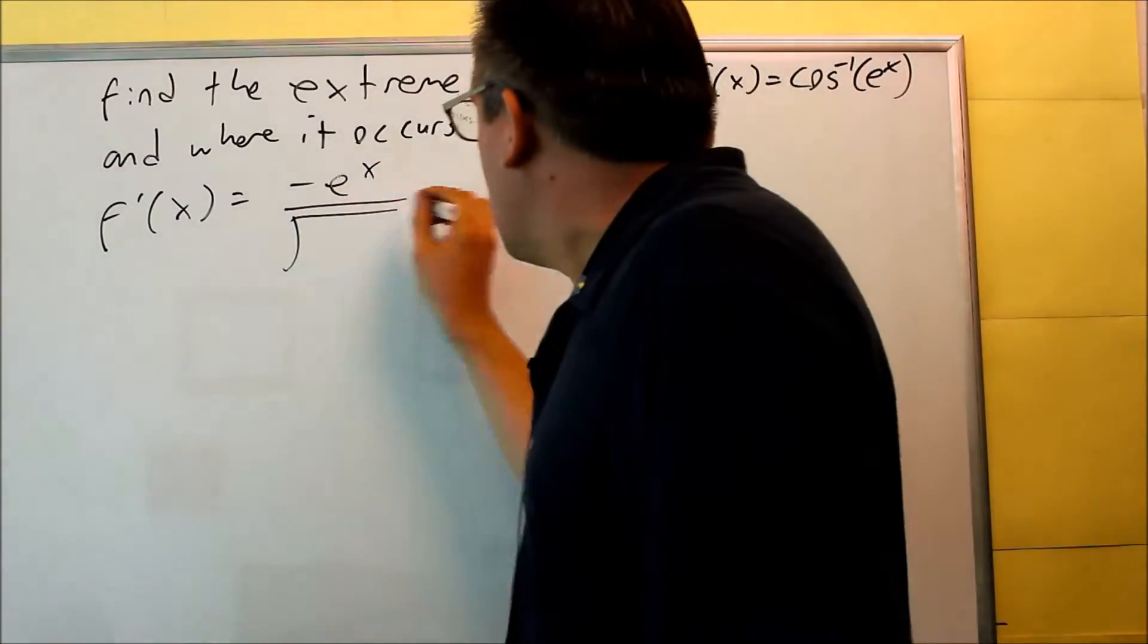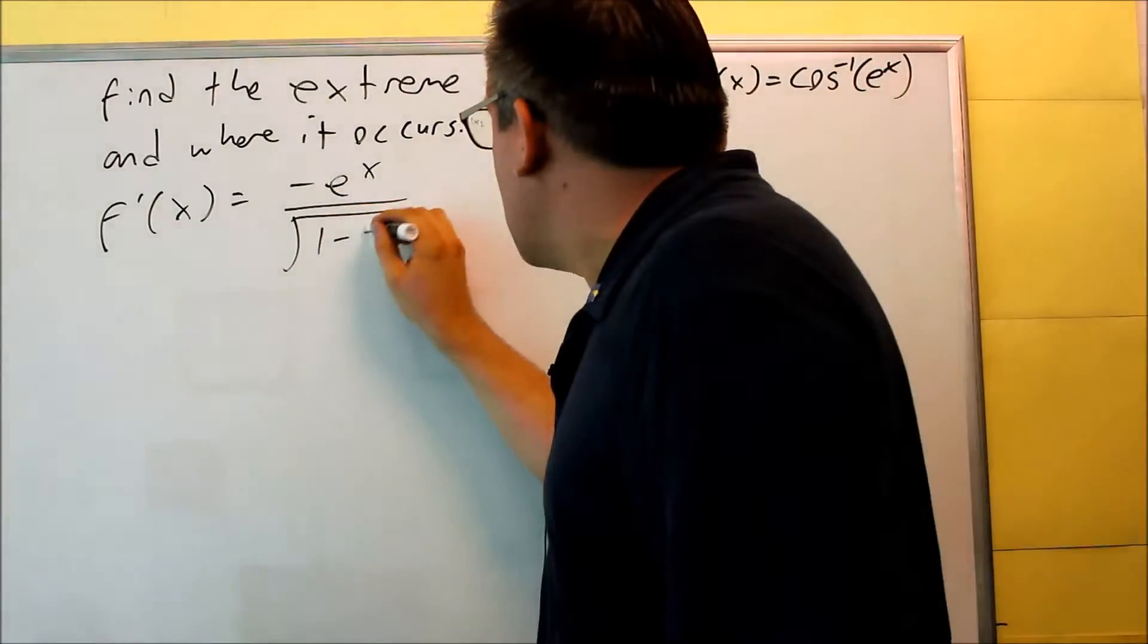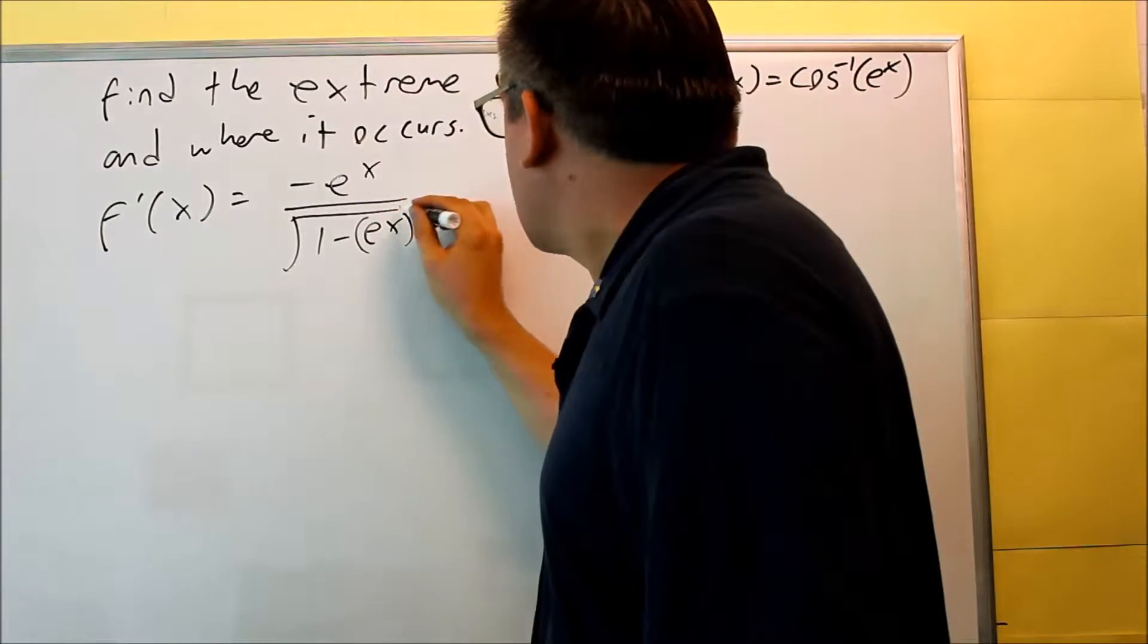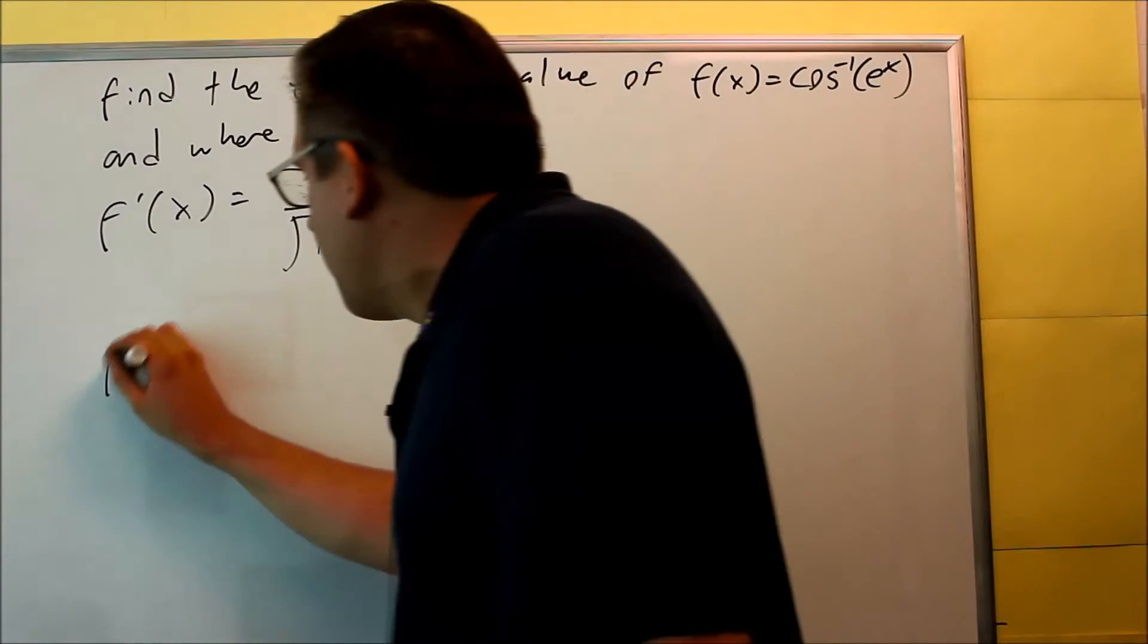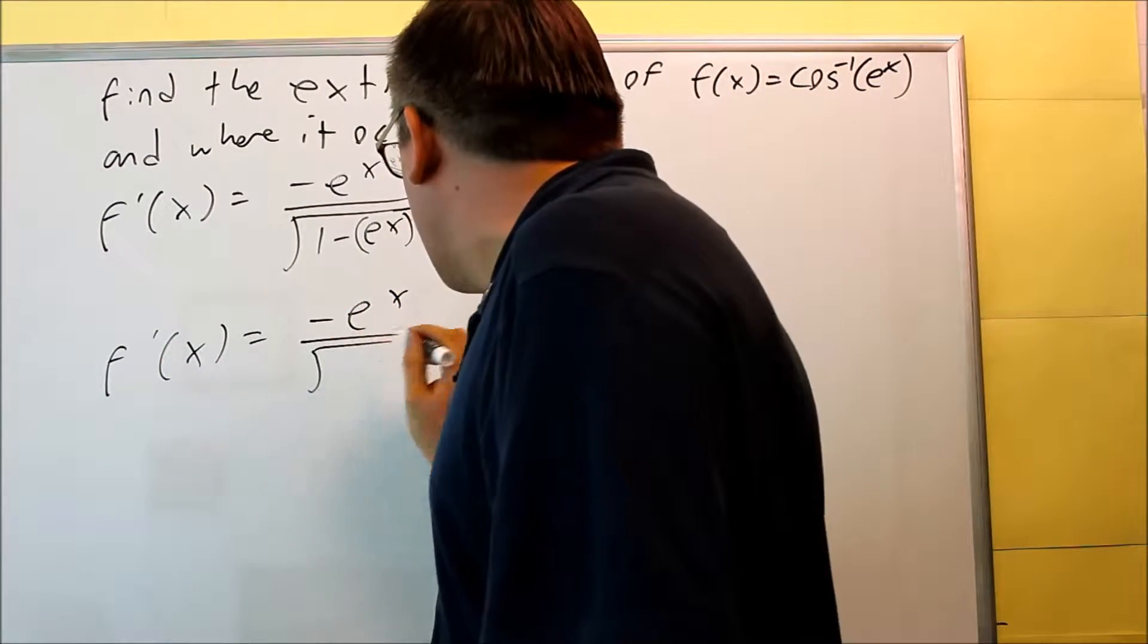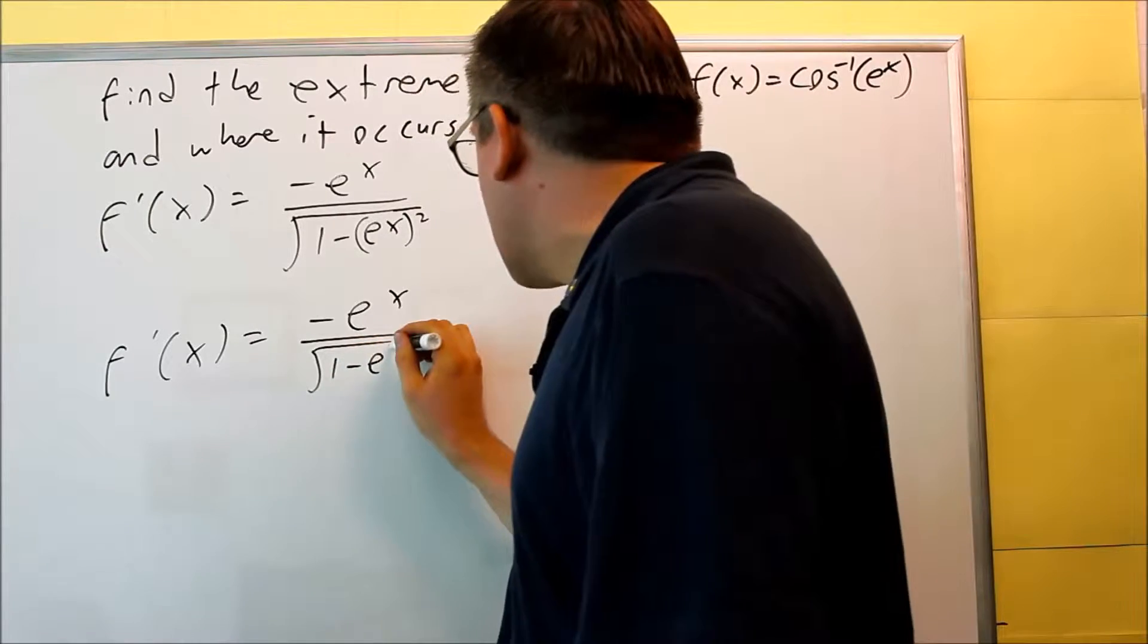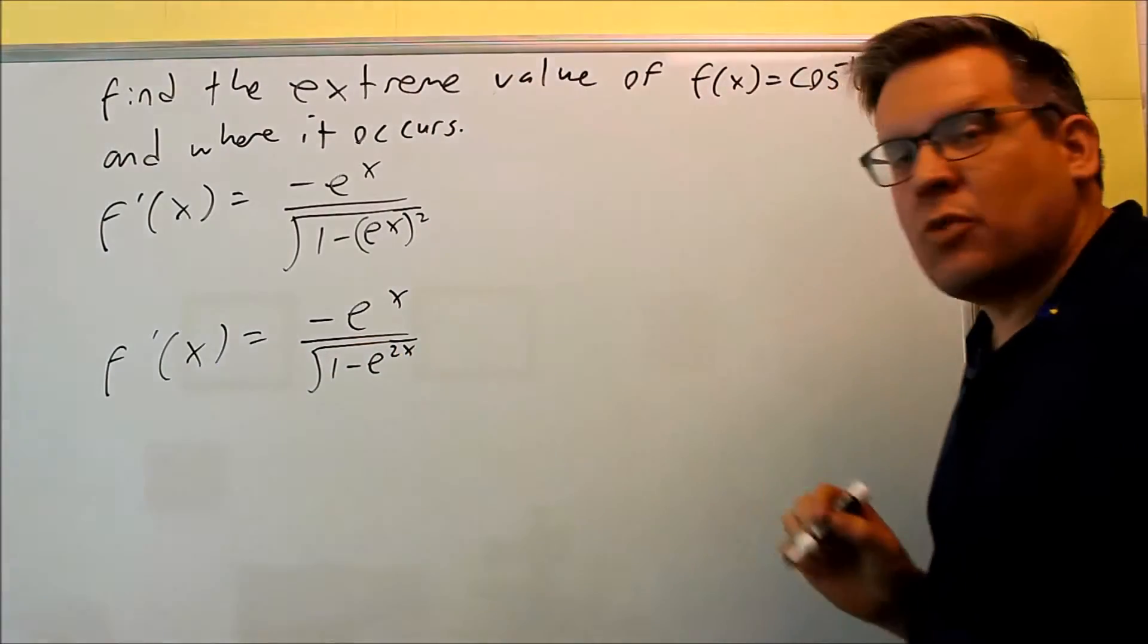On the bottom, we have the square root of 1 minus u squared, 1 minus e to the x squared. We can simplify that. Negative e to the x over the square root of 1 minus, that's going to be e to the 2x because you're going to multiply the exponents.